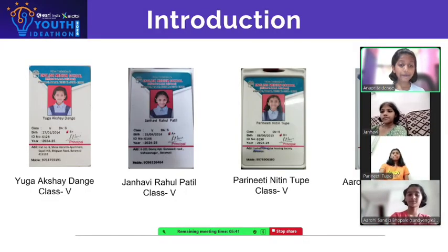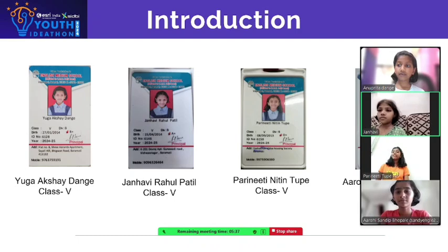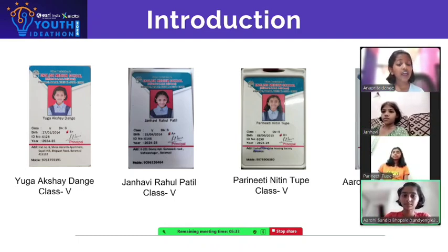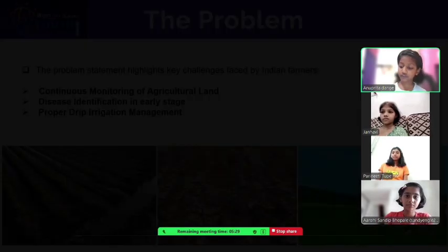Hello everyone. I am Yuga. I am Janvi. I am Kvaliditi. I am Arohi. We are from class 5. Our team name is Krishi Rakshak, the Innovative Agriculture.